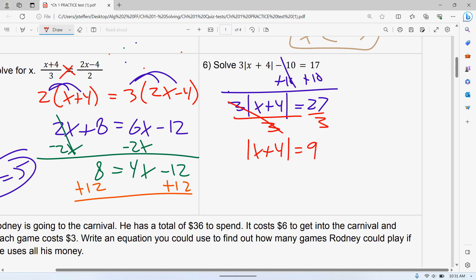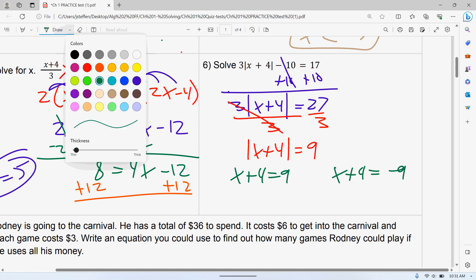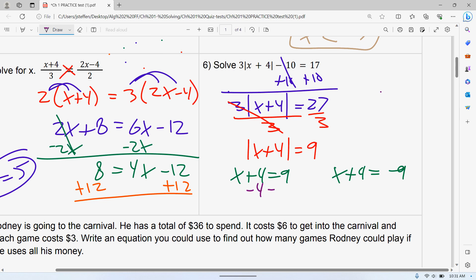Add 12 to both sides. Divide by four to get X. You have to get the absolute value by itself before you take your two equations. Before you do the plus 17 and minus 17, I have to add 10. Three times X plus four is equal to 17 plus 10. 17 plus 10 is 27.